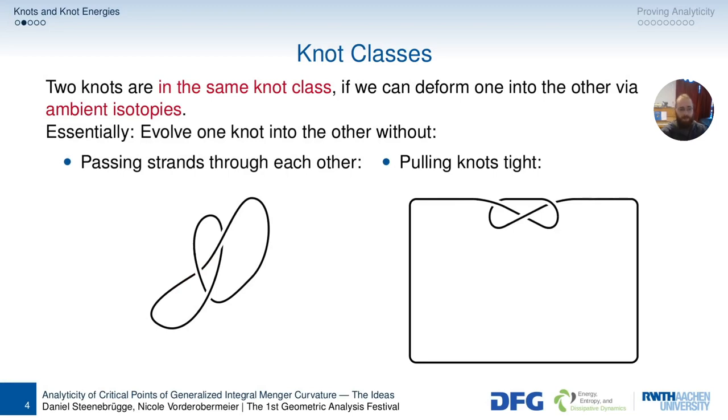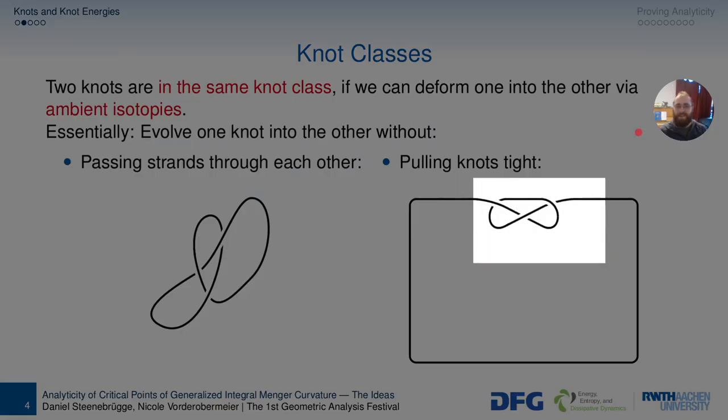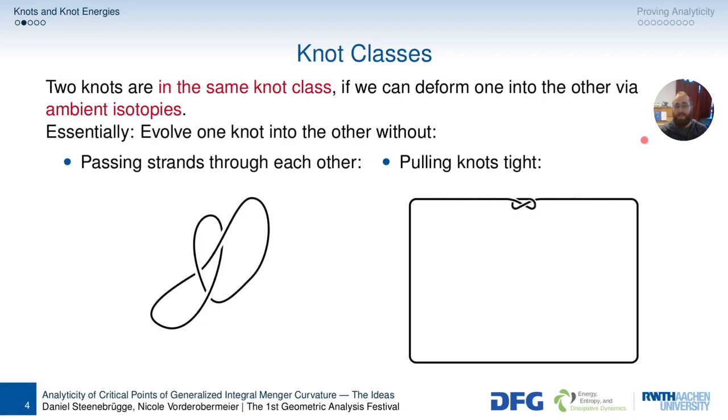And on the other hand, I don't want to pull knots tight. I mean, if you imagine a rope, this thing has finite thickness. I can pull really hard on this knot, but it won't vanish. Here it can vanish if I'm not careful, because this thing has infinitesimal thickness, so at some point it's just gone. And this kind of changes the knot, so we don't want that either. So if we don't do these two things, then we're probably fine. Then we say that two knots are in the same knot class.